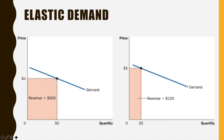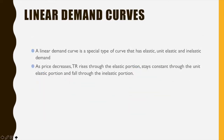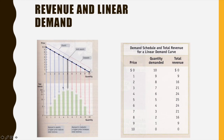There's one final type we need to discuss: the linear demand curve. A linear demand curve is a special type of curve that has elastic, unit elastic, and inelastic demand all along the same curve. The top of the curve is elastic, the middle is unit elastic, and the bottom is inelastic. As price decreases, total revenue rises through the elastic portion, stays constant through the unit elastic, then falls through the inelastic portion.